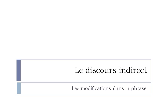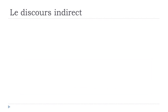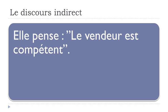We saw together in the two previous videos le discours indirect — the way to construct it and a few modifications that can happen. If you didn't watch the previous videos I definitely advise you to do so. For a quick overview: the discours indirect is basically when you've got a sentence like 'Elle pense, le vendeur est compétent.'